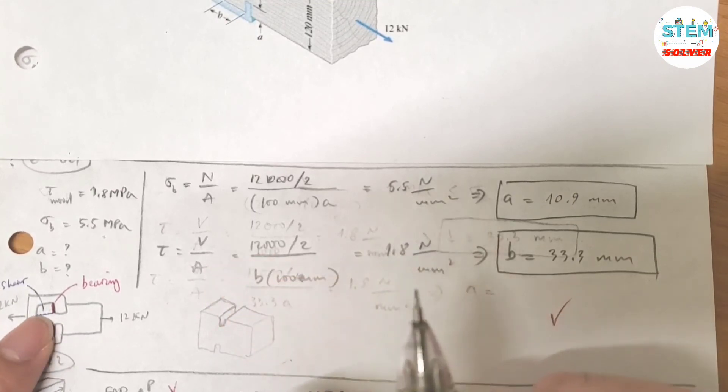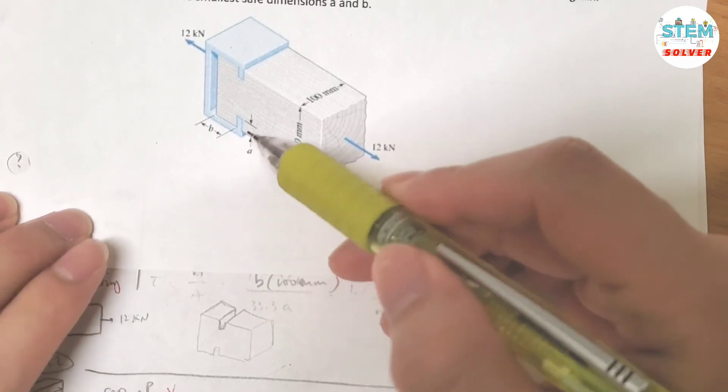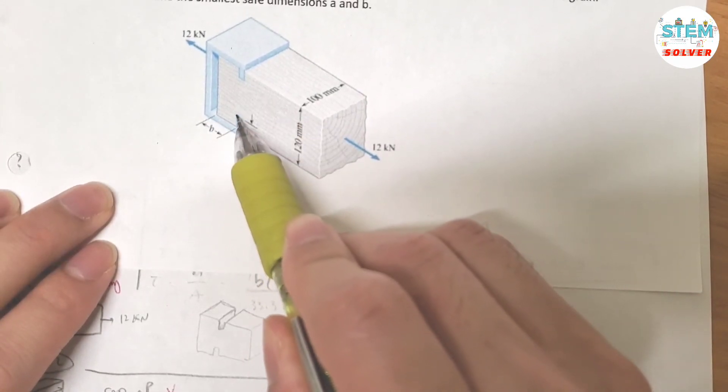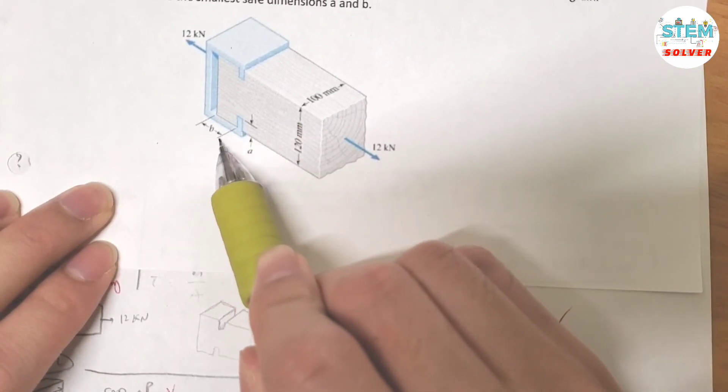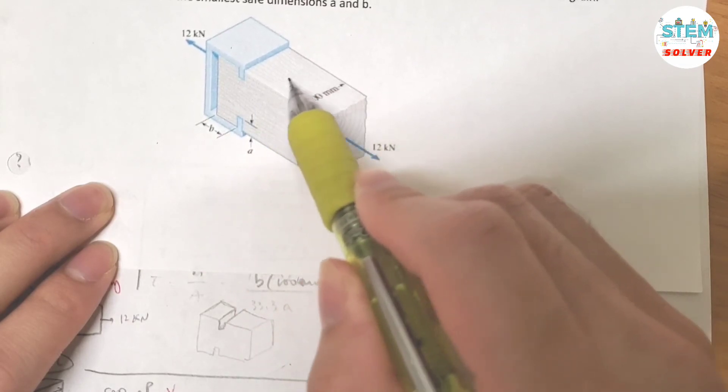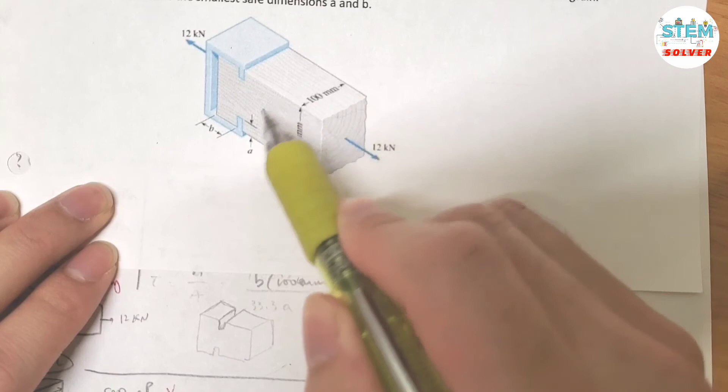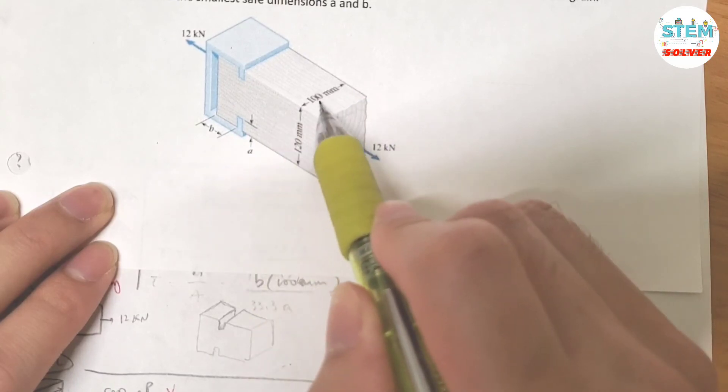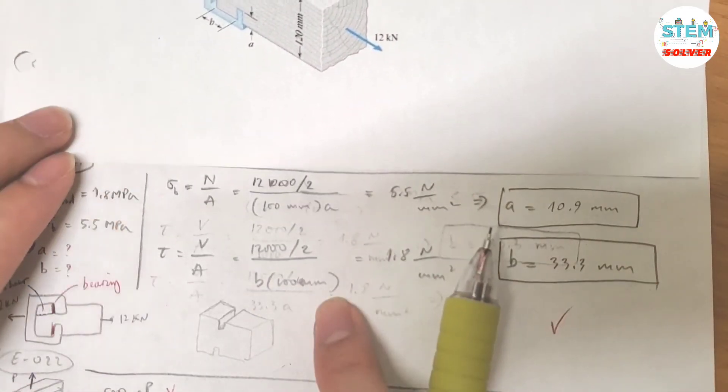What is this area? Look back to the original figure. The area is this part. You have this length, this dimension, and the dimension of this part, from this side to this side. So, you have B times 100 mm. That is your area.